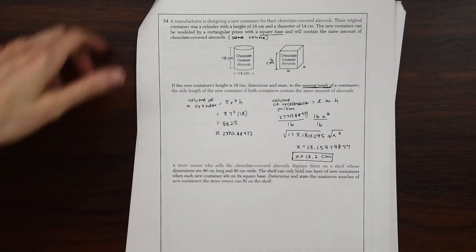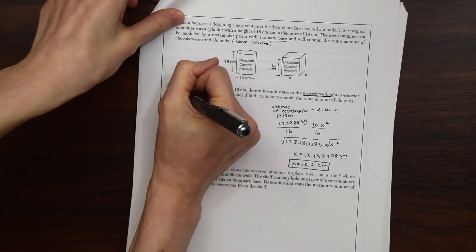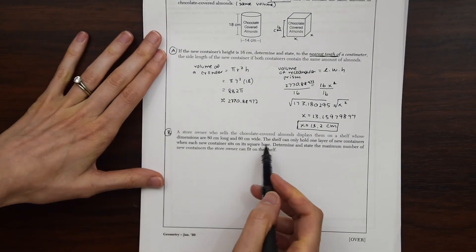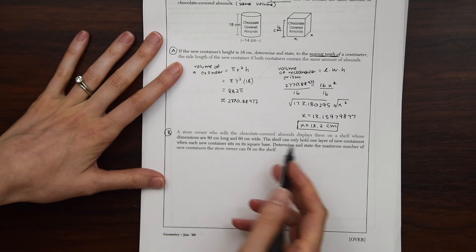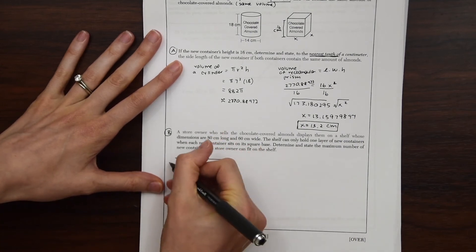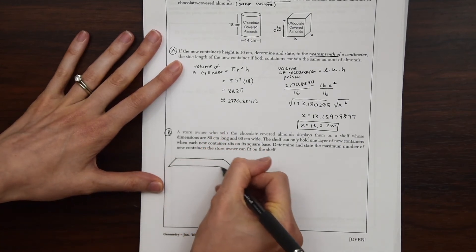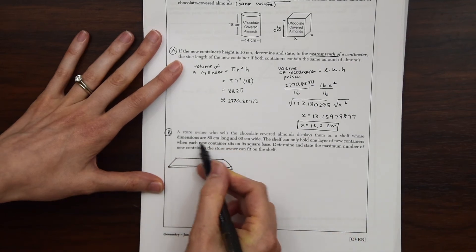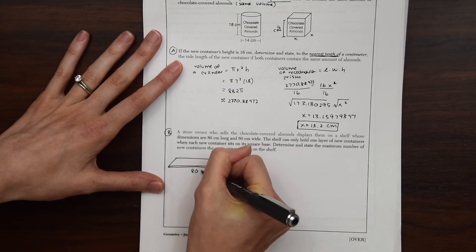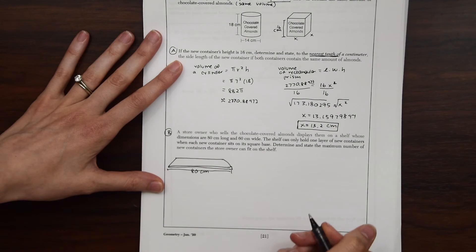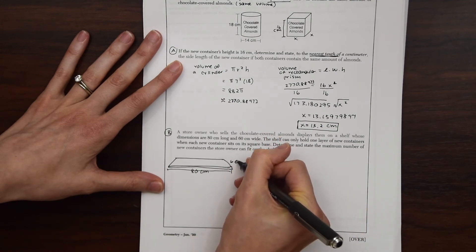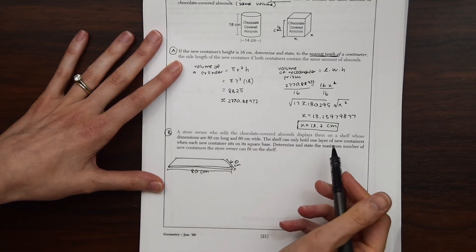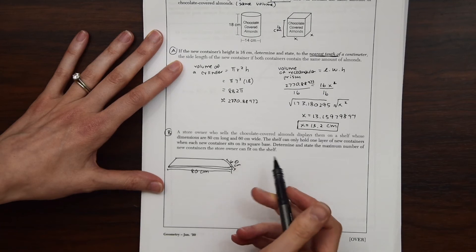So there is a second part to this question. So this was like part A. And now we have part B. A store owner who sells the chocolate covered almonds displays them on a shelf. So let's draw out a shelf. So here's like a kind of a 3D view of a shelf and what that might look like. So the dimensions of the shelf are 80 centimeters long. So 80 centimeters this way and 60 centimeters wide. So 60 centimeters this way.